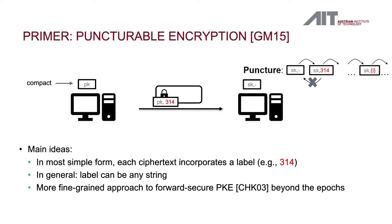The main ideas of puncture encryption are the following. In the most simple form, each ciphertext incorporates such a label — in general this can be any string. In particular, this yields a more fine-grained approach to forward-secure public key encryption beyond the epochs.